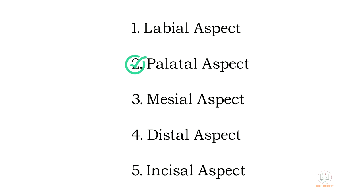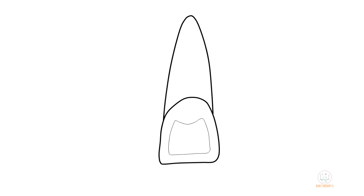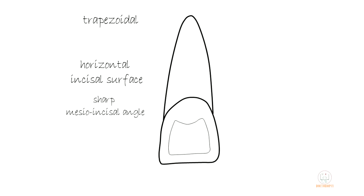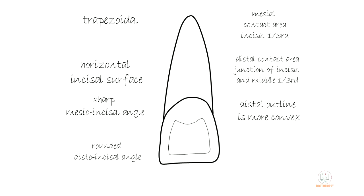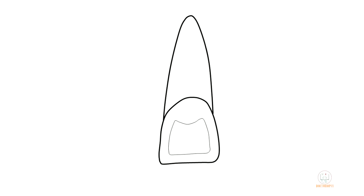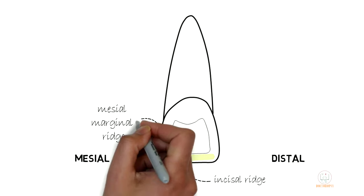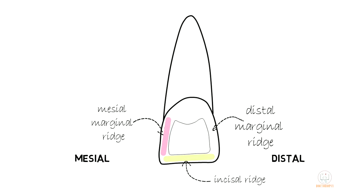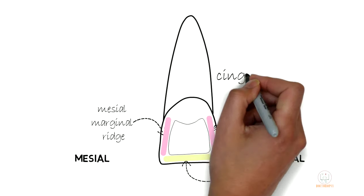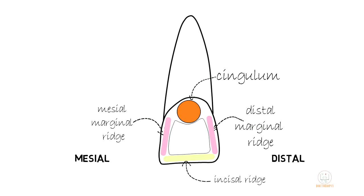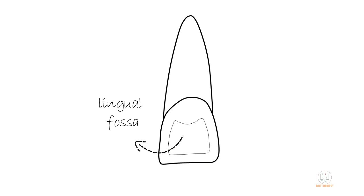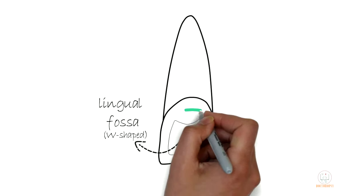Now the palatal aspect — the side towards the palate. As the palatal surface is narrower than the labial surface, all the features of the outline form from the labial aspect remain the same in the lingual aspect as well. The lingual surface has three ridges: one incisal ridge which runs horizontally between the mesio-incisal angle and the disto-incisal angle; two marginal ridges which run along the mesial and distal margins — the mesial marginal ridge runs from the mesio-incisal angle to the cingulum, and the distal marginal ridge runs from the disto-incisal angle to the cingulum. A large convexity called the cingulum is present in the cervical third.